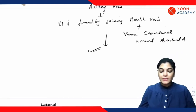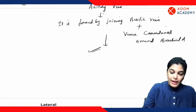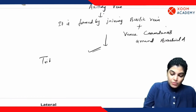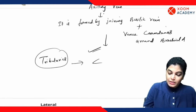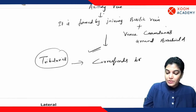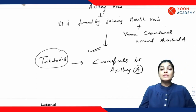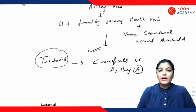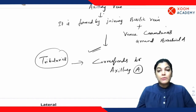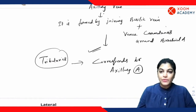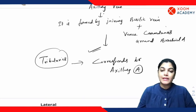It is also important to understand the important tributaries of the axillary vein. The important tributaries of the axillary vein correspond to the branches of the axillary artery — we have already discussed the topic of axillary artery. The subscapular vein, the lateral thoracic vein — all those branches of the axillary artery correspond to the names of the axillary vein tributaries.